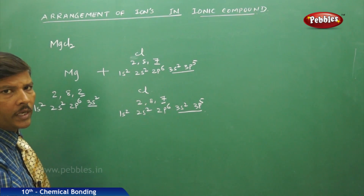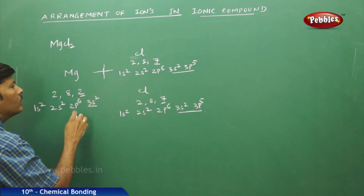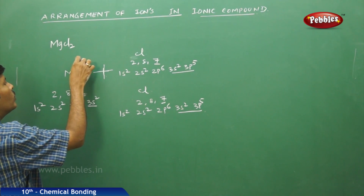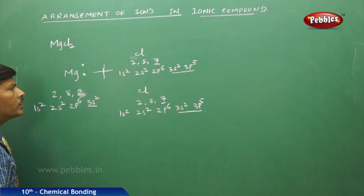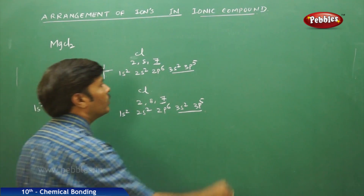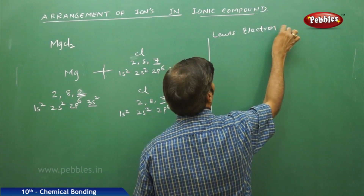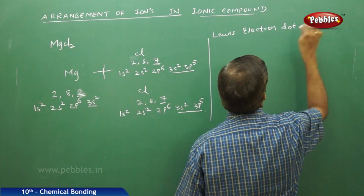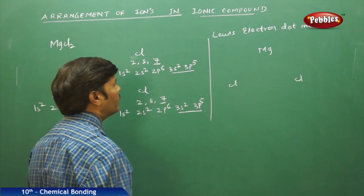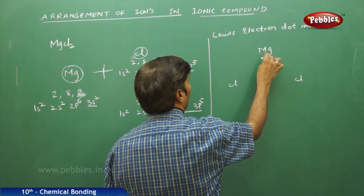The second chlorine atom also has seven valence electrons. Magnesium, being a metal, will lose its two valence electrons. Using the Lewis electron dot method: magnesium has two valence electron dots, and each chlorine has seven valence electron dots. Magnesium will transfer one valence electron to the first chlorine and the other valence electron to the second chlorine.